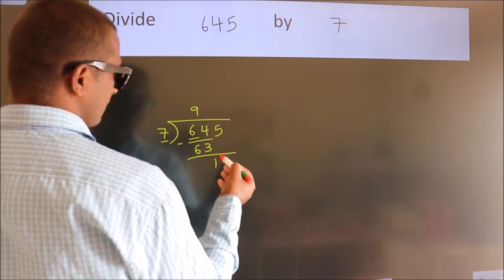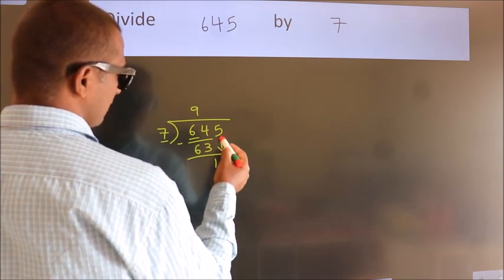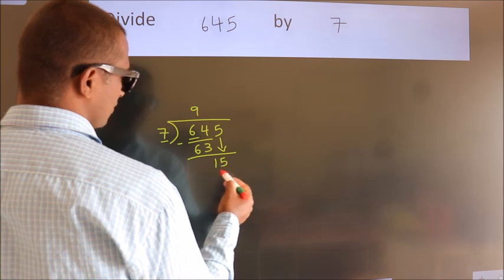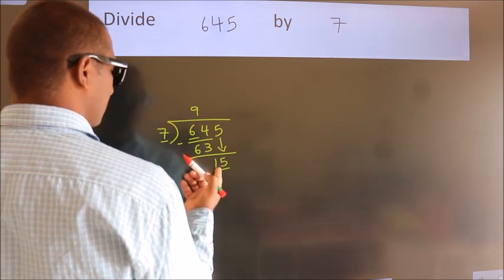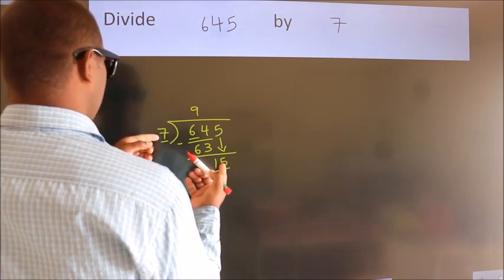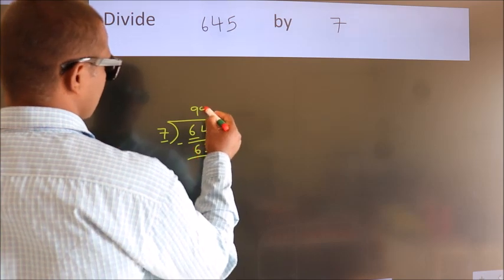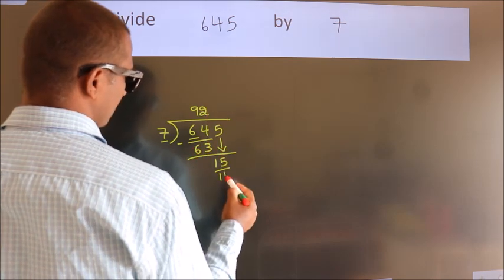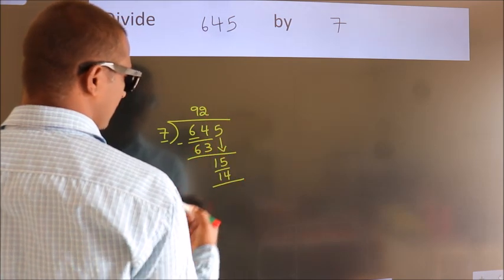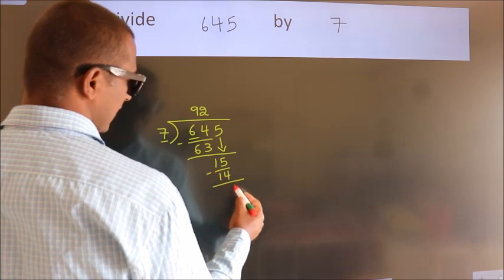After this, bring down the beside number, so 5 down, making 15. A number close to 15 in the 7 table is 7 twos, 14. Now we subtract and get 1.